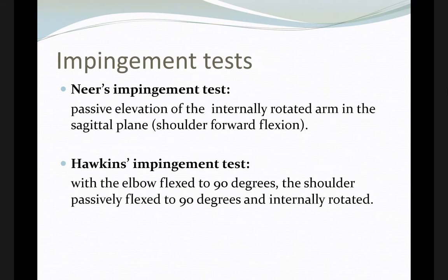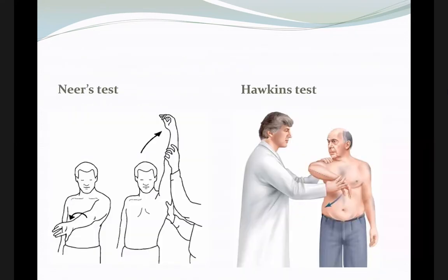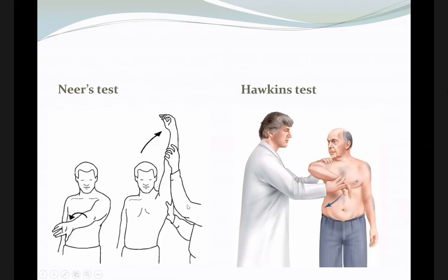The impingement tests include the Neer impingement test and the Hawkins impingement test. For the Neer test, you perform internal rotation with upward extension, and the patient will have pain. For the Hawkins test, you perform internal rotation with abduction, and the patient will have severe pain at the site of the bursa. This is diagnostic for impingement syndrome.